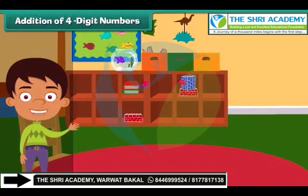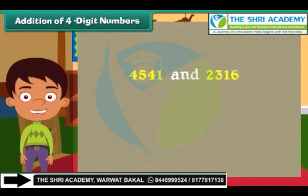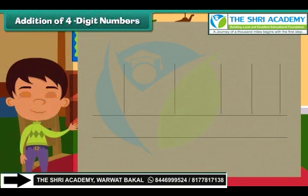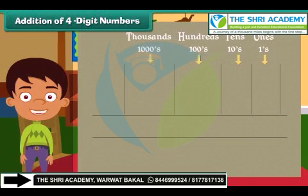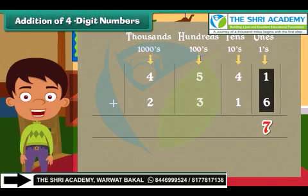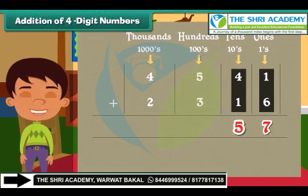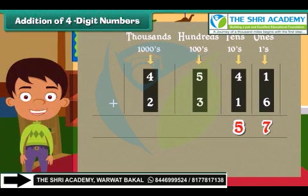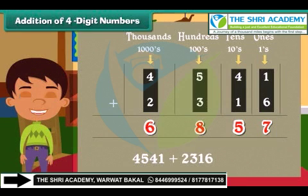Addition of four-digit numbers. The first problem that Ben picks to solve is to add the numbers 4541 and 2316. Start solving the question by writing the numbers in the columns. Remember that we begin adding from ones. So here the addition is 7. Now we move to add the tens: 4 plus 1 is equal to 5. Similarly, we add the numbers under hundreds and thousands. The numbers we get are 8 and 6 respectively. So 4541 and 2316 when added is equal to 6857.